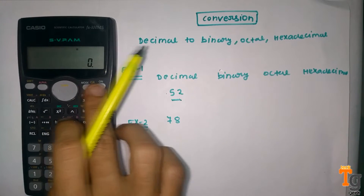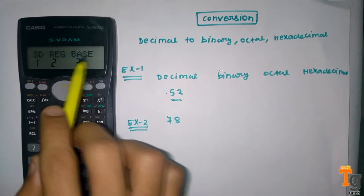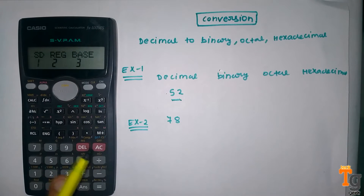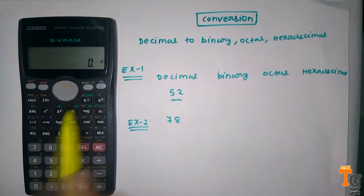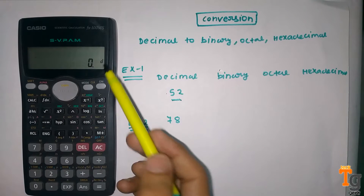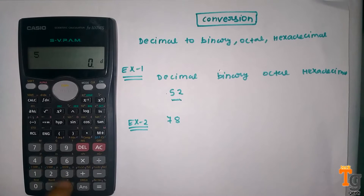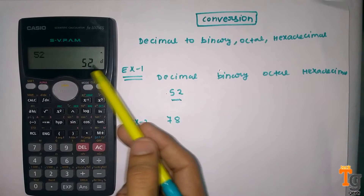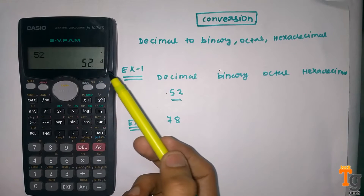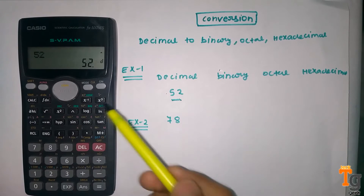For this, you have to click on mode until you find base. Here you can see base, so I will press 3. You can see here is a sign of decimal, and our question is 52, so I will press 52 and again I will press equal.